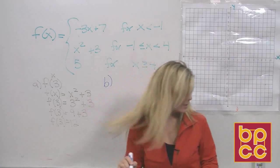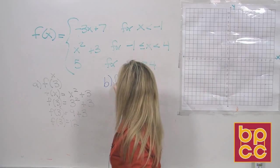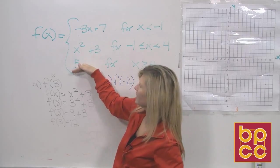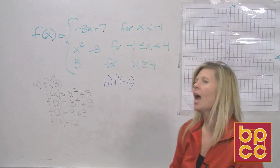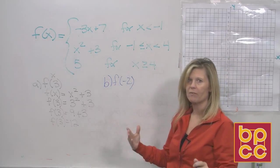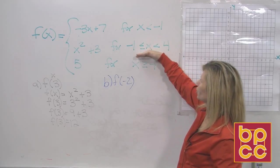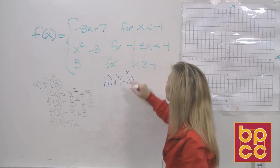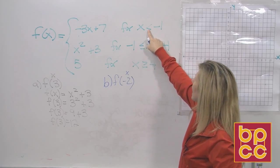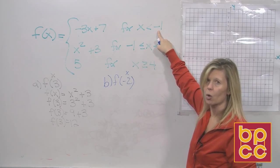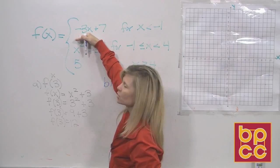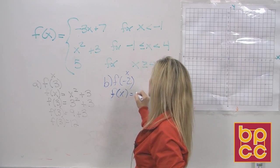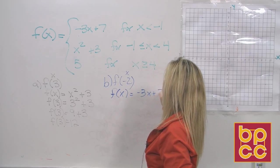Part B says f of negative 2. So again, function notation, we are in three pieces. Piecewise function. How do you know which piece to work with to evaluate? You look at your conditions or restrictions. Our next value is negative 2. Is negative 2 less than negative 1? It sure is. So this will be the piece we use. We are going to use this first equation.